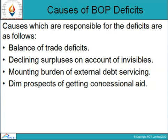Another factor behind the increasing pressure on BOP has been the steadily mounting burden of external debt servicing, estimated to have increased from $7.6 billion in 1989-90 to $10.5 billion in 1994-95. The last responsible factor for deficits is the prospect of getting concessional aid. During the earlier course of economic development, current account deficits could easily be funded by concessional aid from bilateral and multilateral sources. But towards the end of the 1980s, sources of concessional assistance were drying up, whereas current account deficits were mounting.